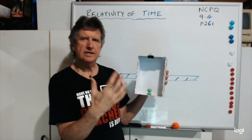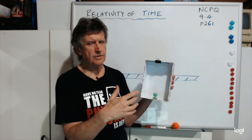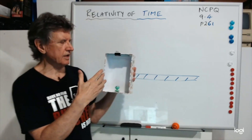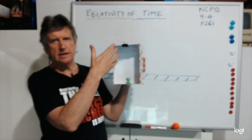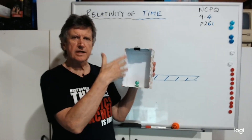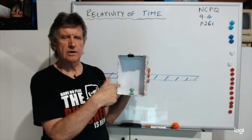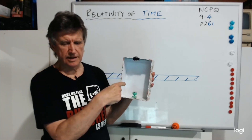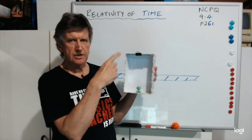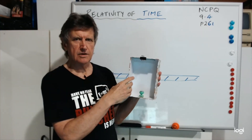We'd call that t0, because we're moving at a speed of zero with respect to the event. So that'd be t0.